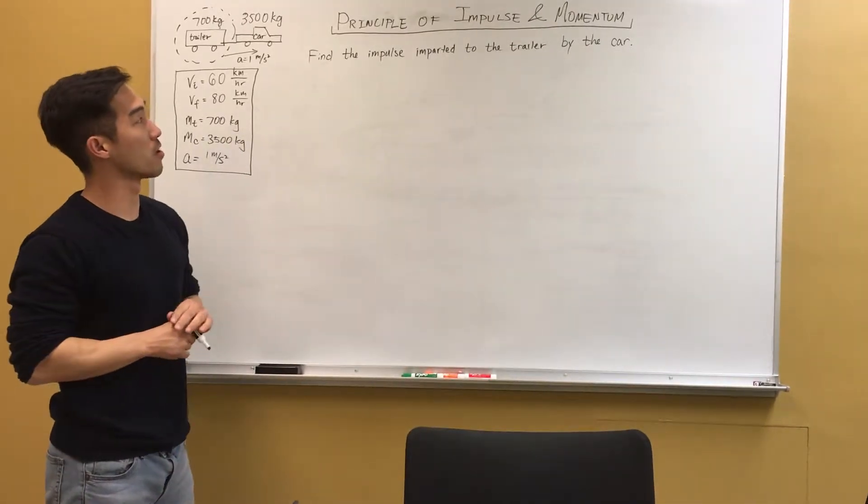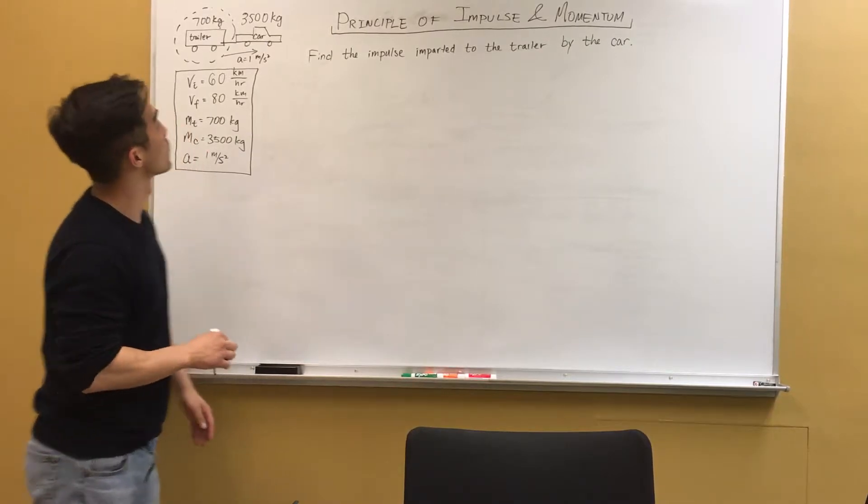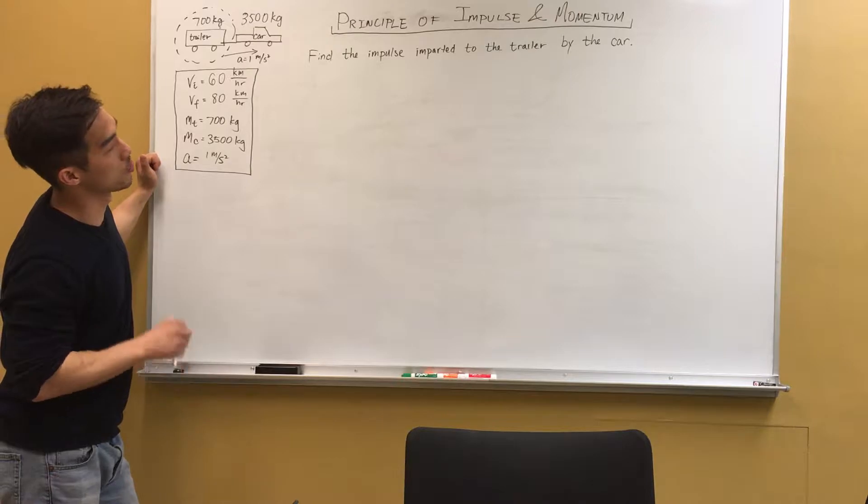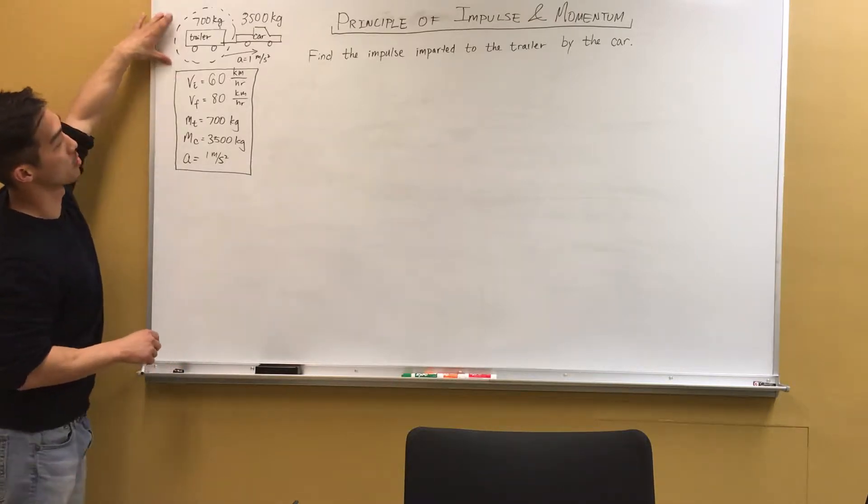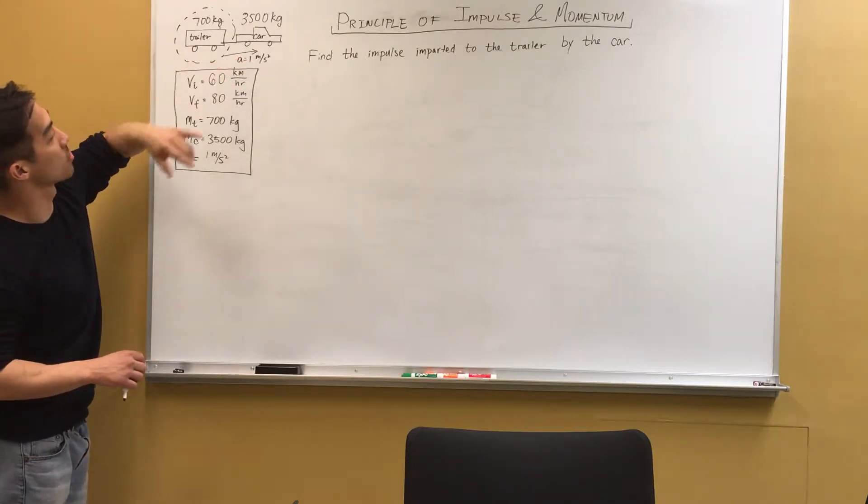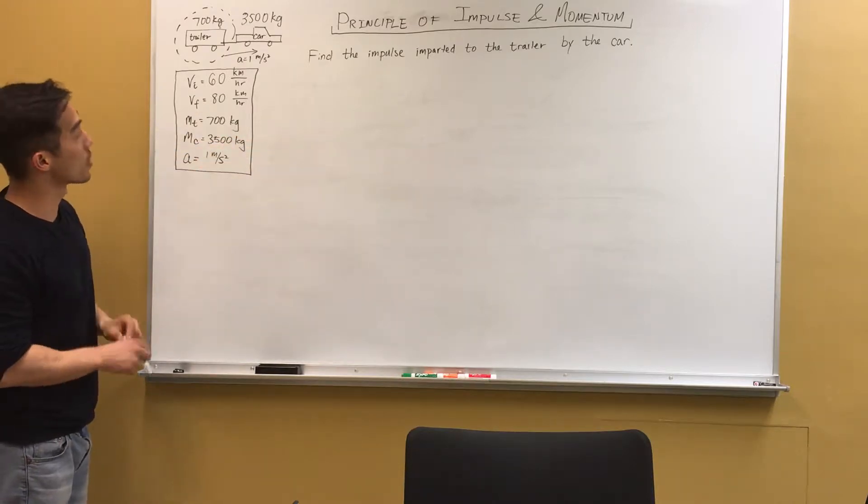Hello. So in this video, we're going to talk about the principle of impulse and momentum. The question asks to find the impulse imparted to the trailer by the car. And the diagram of what's going on is shown here. As you can see, the trailer is attached to the car by a hitch, and it's going to be accelerating to the right at one meter per second squared.